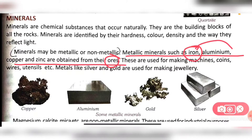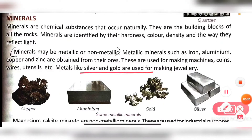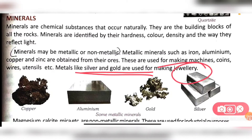Metallic minerals include iron, aluminium, copper, and zinc. Similarly, there are also non-metallic minerals. Metallic minerals are used to make different machines, coins, wares, and utensils - all these things made of metal require metallic minerals. Also, some metals like silver or gold are used for making jewelry and precious things.